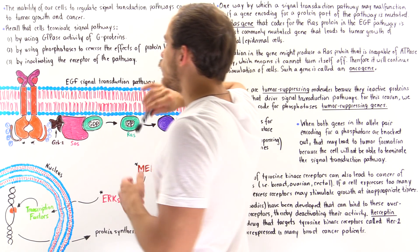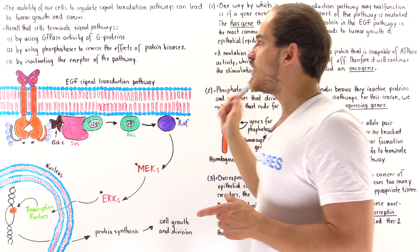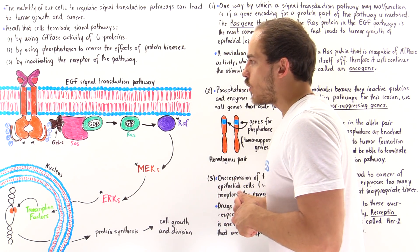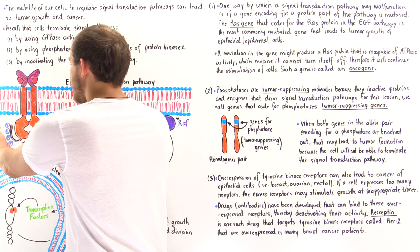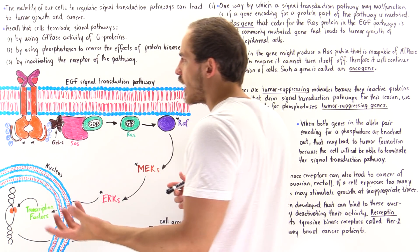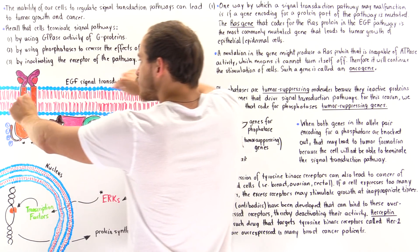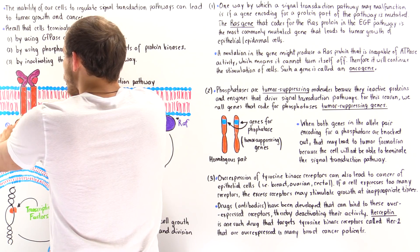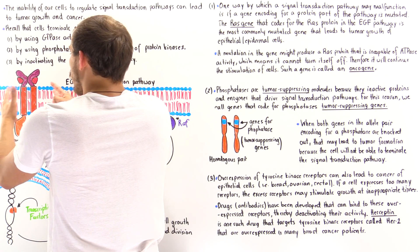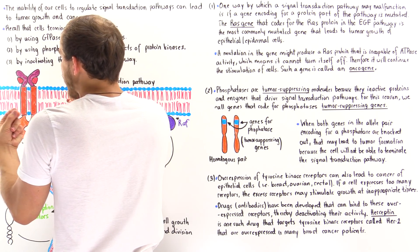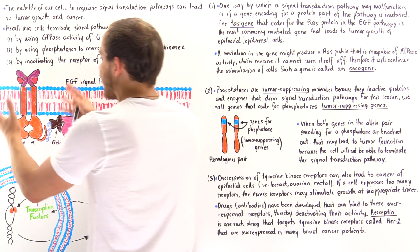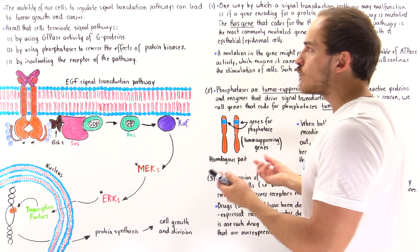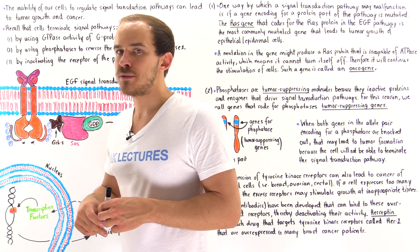Method number three: we can terminate the pathway by inactivating the receptor. One way is by removing the phosphoryl groups. Another way is if the two ligands actually dissociate — when the two ligands dissociate, the entire dimer breaks apart into monomers, and in that case it is not as active as when dimerized. This decreases the activity of the signal transduction pathway. This is the normal way by which the pathway is terminated.